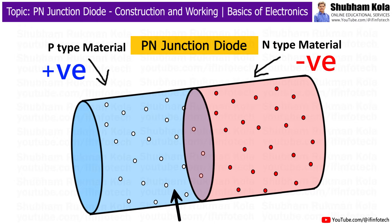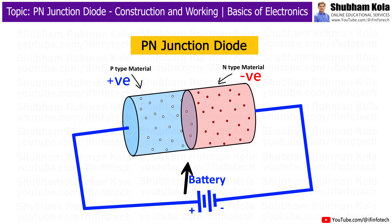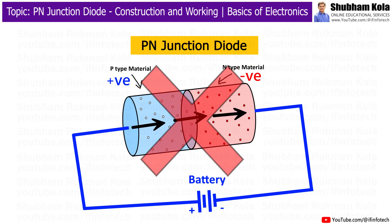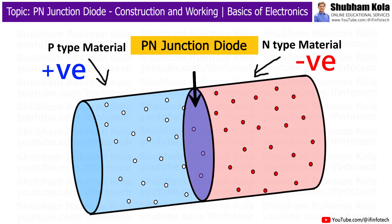When we place P-Type Material and N-Type Material next to each other, they form a P-N junction. This junction creates a diode — a device that allows electric current to flow in only one direction while blocking it in the other. Let's look at the formation of the P-N junction, and what happens at the boundary called the junction.